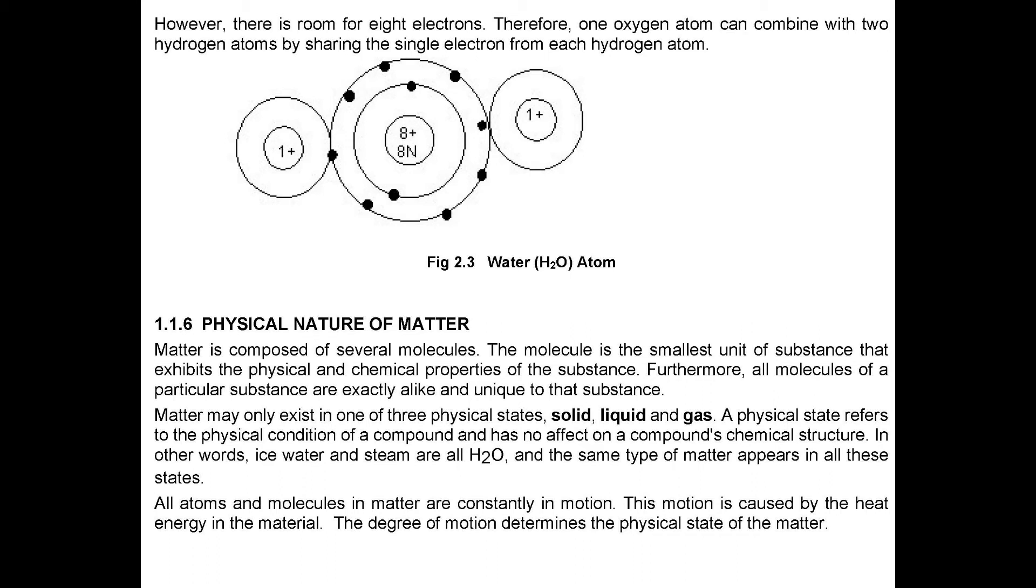Physical Nature of Matter. Matter is composed of several molecules. The molecule is the smallest unit of substance that exhibits the physical and chemical properties of the substance. Furthermore, all molecules of a particular substance are exactly alike and unique to that substance. Matter may only exist in one of three physical states, solid, liquid and gas.